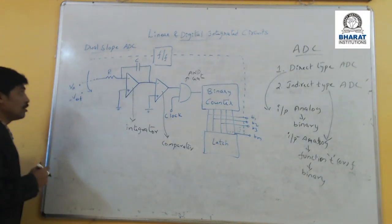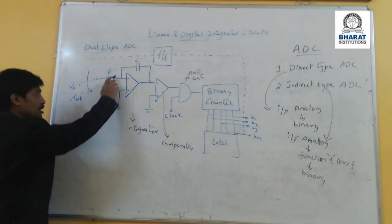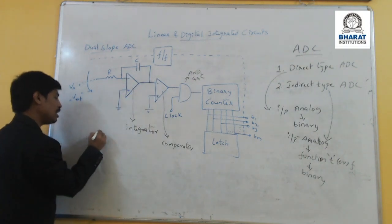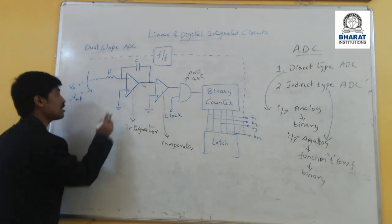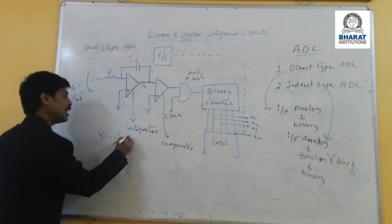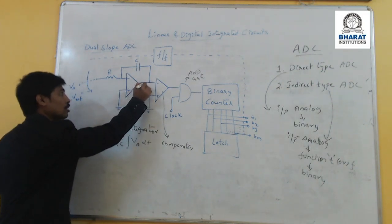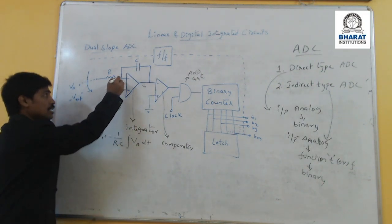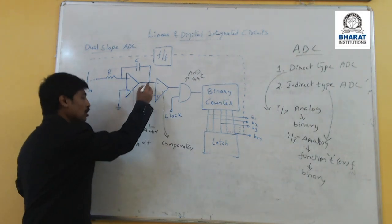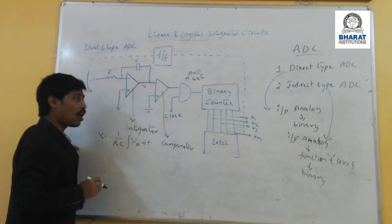Initially, we assume VA is your input. Input is given to the integrator circuit R and C. Here, the output we can assume is V0. V0 can be written as: integrator output = minus 1 by R into C, integral of V_in (which is VA) dt. This is the output of your integrator. As it is an integrator functioning with the help of the inverting terminal, the non-inverting terminal is grounded, and this voltage is given to the non-inverting terminal of your operational amplifier.